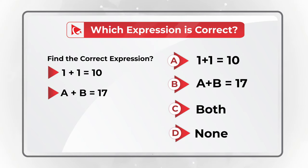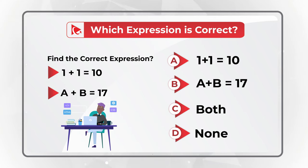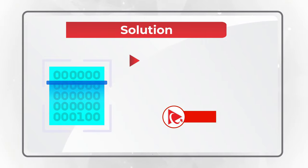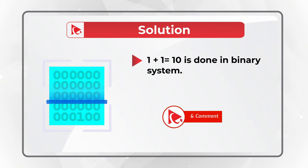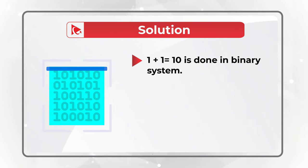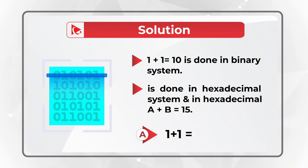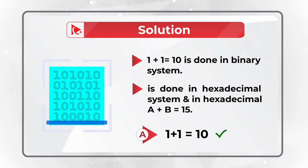I'm going to give you a quick hint. If you have a degree in computer science, it might be easier for you. The trick here is that the first expression is done in a binary system. And in a binary system, 1 plus 1 equals 10. The second expression is done in a hexadecimal system. And in a hexadecimal system, A plus B equals 15. So the correct answer here is choice A, 1 plus 1 equals 10.